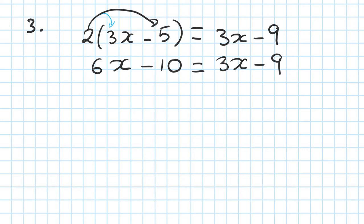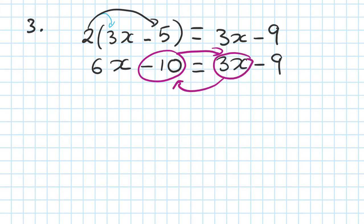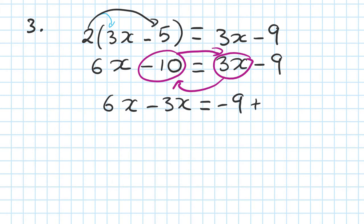Then I'm going to move this number on this side, and then 3x back on this side. So the answer would be 6x minus 3x is equal to negative 9, and then the minus 10 moves over, becomes plus 10. Just remember: plus becomes minus, minus becomes plus. Keep that in mind.